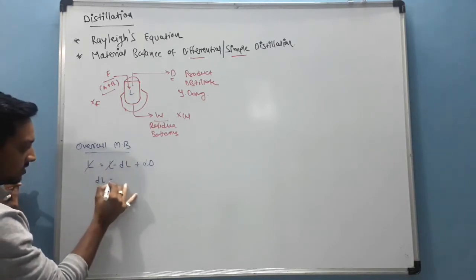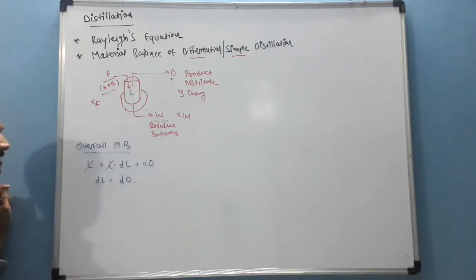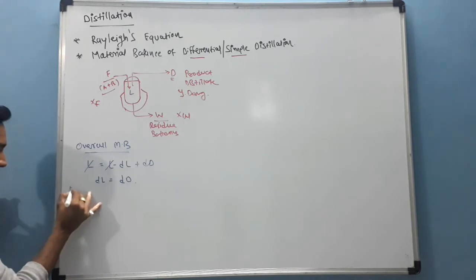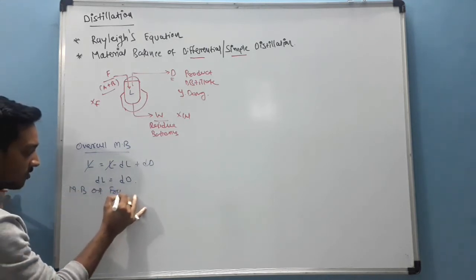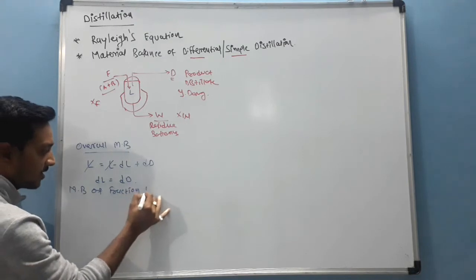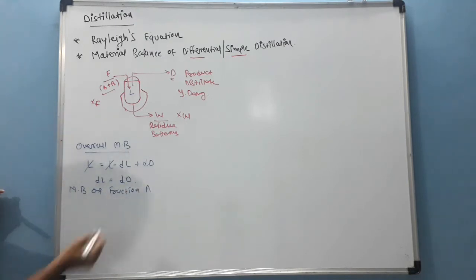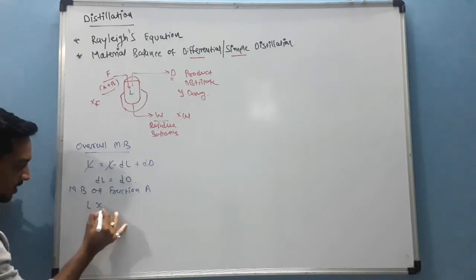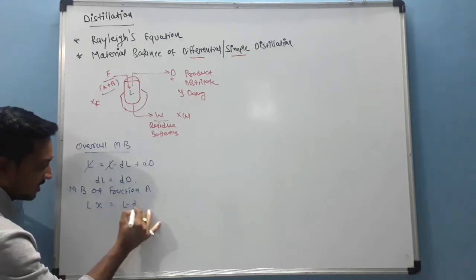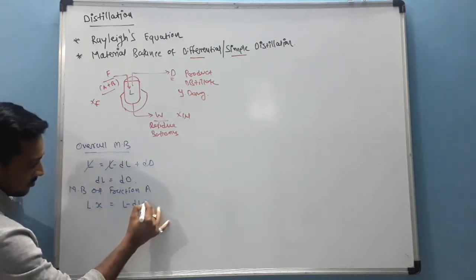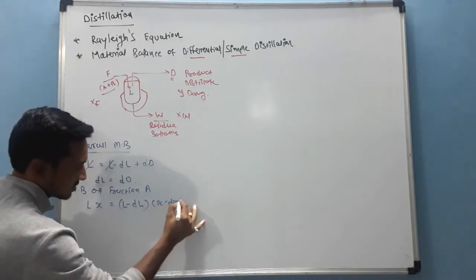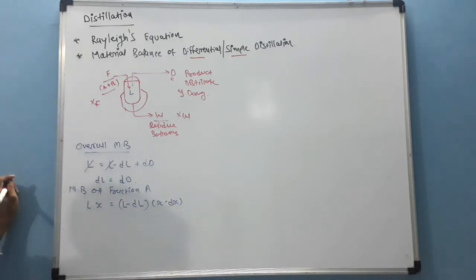Now material balance of fraction A. So A in liquid that is L into X is equal to L to DL is our limit of operation. So X to DX is the fraction A.